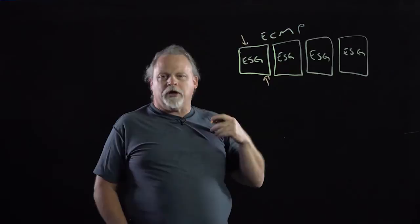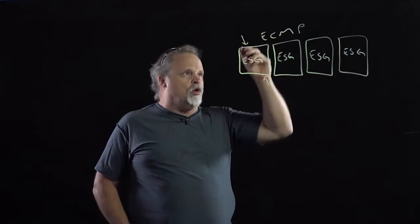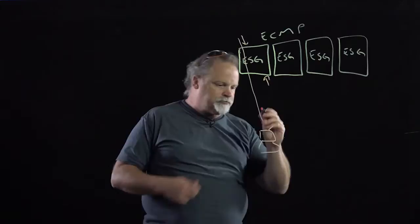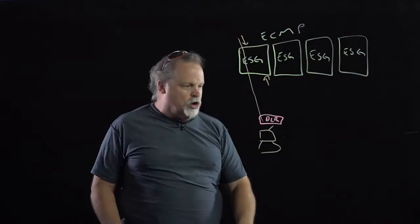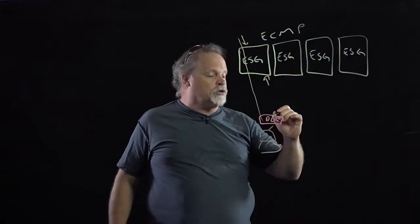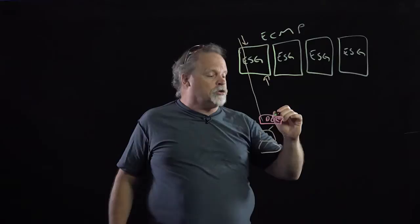We don't want to make, the one thing that we don't want is we don't want a path to go through here, come down to my host sitting down here, and then all of a sudden it hits the router. It'll hit my DLR, which will live right down in here. It hits that DLR and it says, oh, you know what? Because we're doing the equal cost multipath in here, how's about if I send that traffic up through this ESG? Well, what's going to happen? It's going to drop it. It's going to throw it right in the bit bucket.